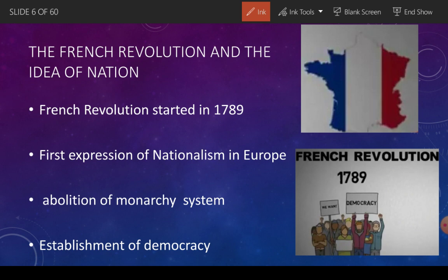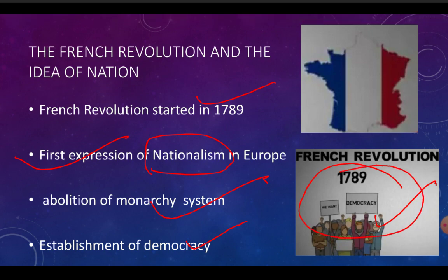French Revolution - aap ninth class mein padh chuke ho - 1789 mein hua tha, aur yeh first expression tha Europe mein nationalism ka. Uske andar jo people the, woh democracy ki demand kar rahe thay. Aur democracy aayegi kab? Jab monarchy system khatam ho jayega. Aur unhonne isse prapt bhi kar liya tha - unhonne wahaan ki monarchy system ko hataakar wahaan democracy ko establish kiya tha.